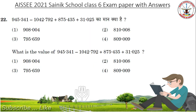What is the value of 945.341 minus 1042.792 plus 875.435 plus 31.025? Pause the video and do the calculation. Answer is 809.009.